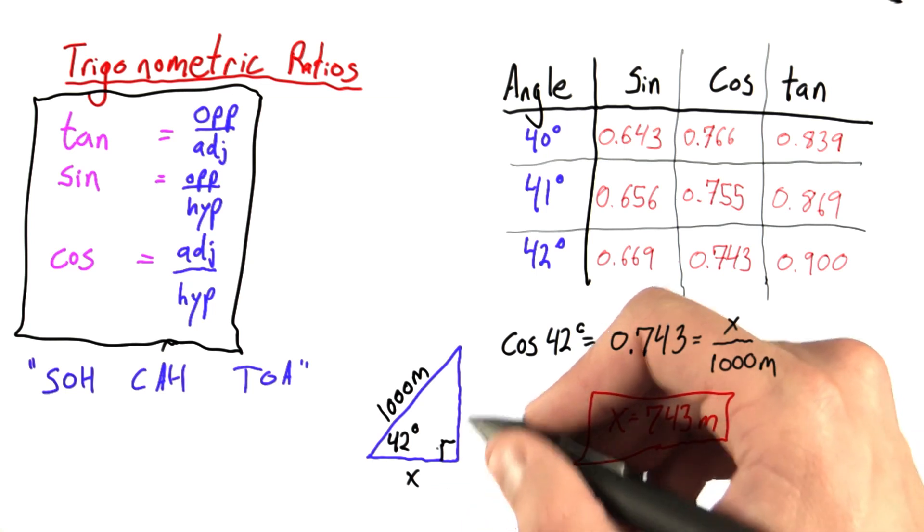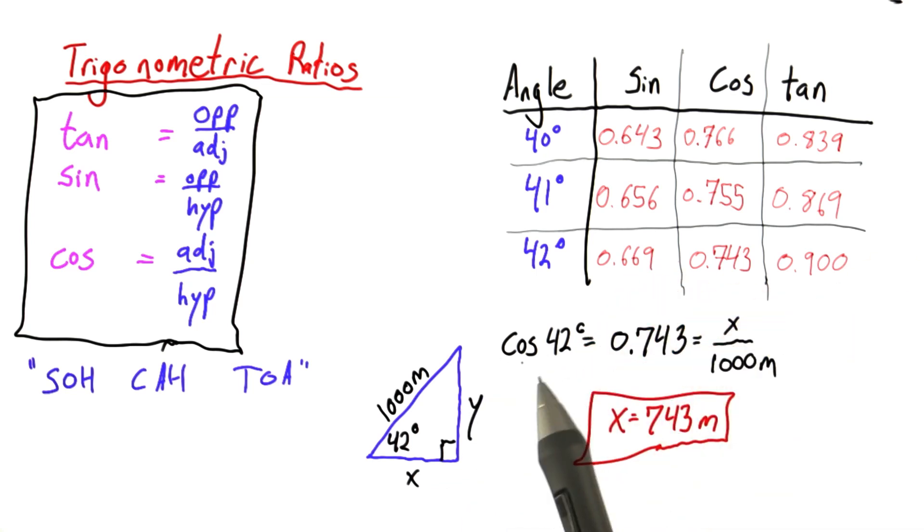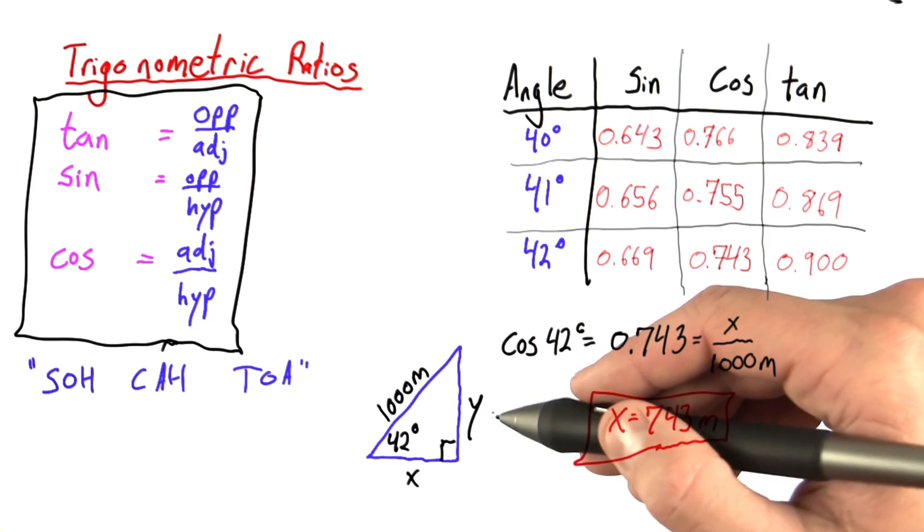Now I'm going to give you a shot. Let's call this unknown length y. Can you go through a similar set of steps, maybe you won't be using cosine this time, to figure out how long is this side y?